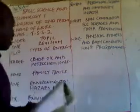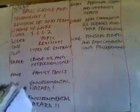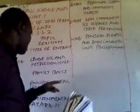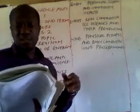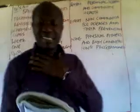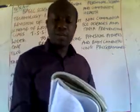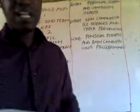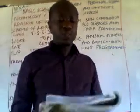Moving on, the environmental hazards topic is divided into two parts. The second part focuses on bush burning. We talked about bush burning in that class — its definition, the practices that involve bush burning, the effects, the economic consequences, and regulations against bush burning.